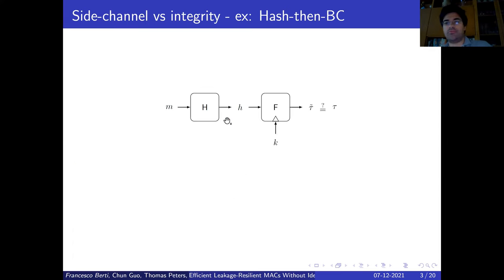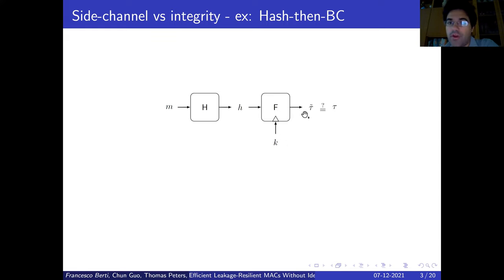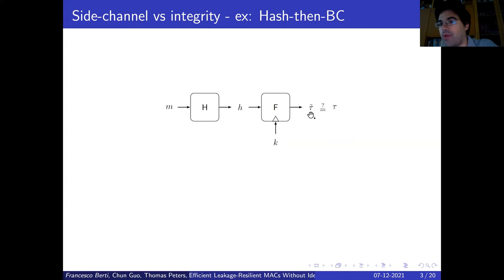To illustrate this problem, consider this simple CBC-MAC, which is a MAC. We start with a message, then hash it, and the output is passed as input to a block cipher, and we compute the tag. To verify, we recompute the tag-tilde, and then we compare it with the tag which is provided with the message, checking whether this tag is valid or not.